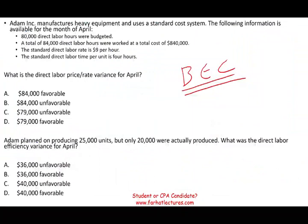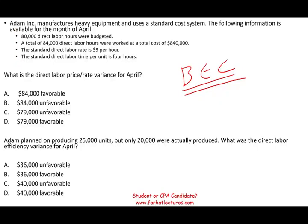Let's take a look at these questions. The first thing you want to do when you see a lot of numbers and data is read the question first, because they could be asking you different questions about the same data. You don't want to waste time on information you don't need. The first question asks: what is the direct labor rate or price variance for April?